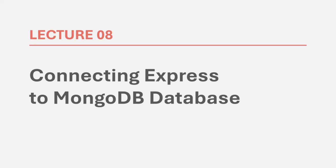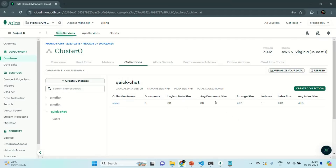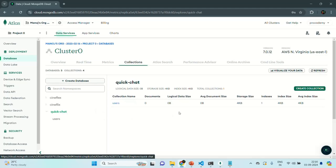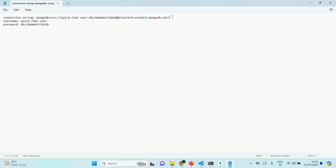In the last lecture we created a MongoDB database in Atlas, copied the connection string of the Atlas server, and pasted it in a notepad. Now we want to use that connection string to connect our Express application to the QuickChat database which we created in the last lecture.